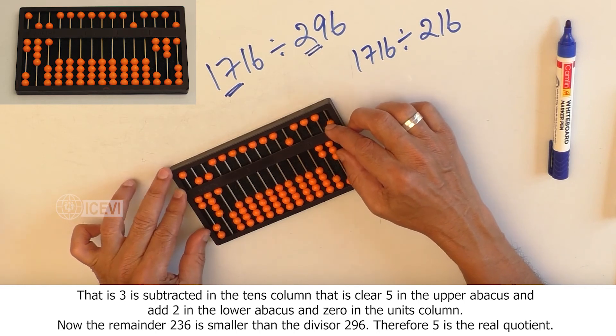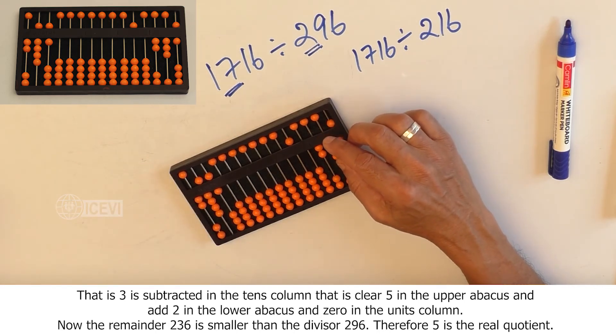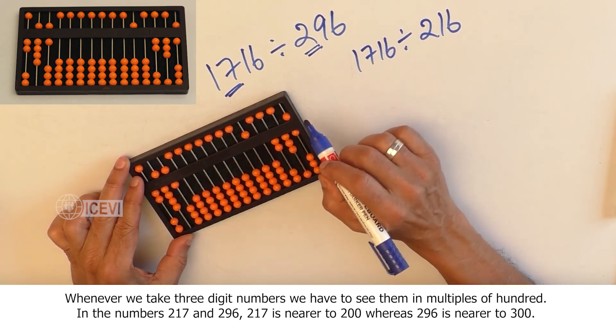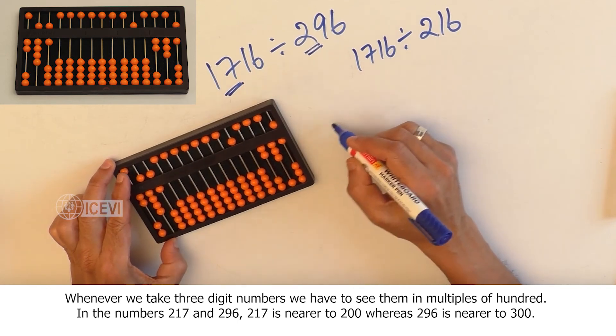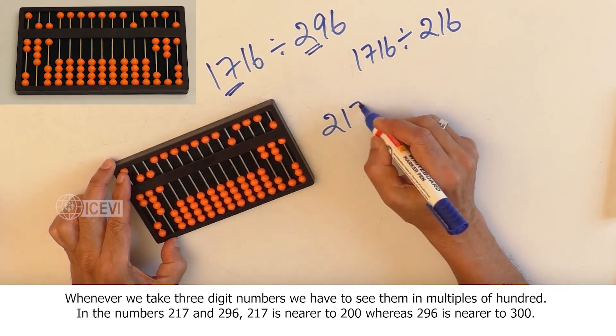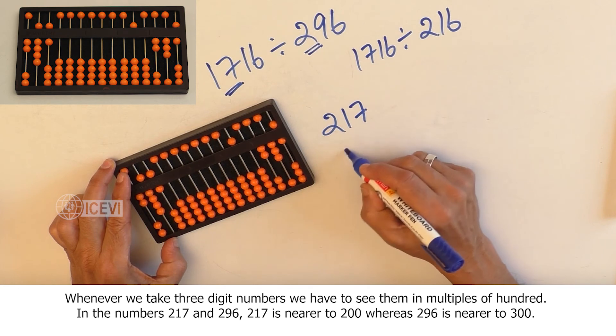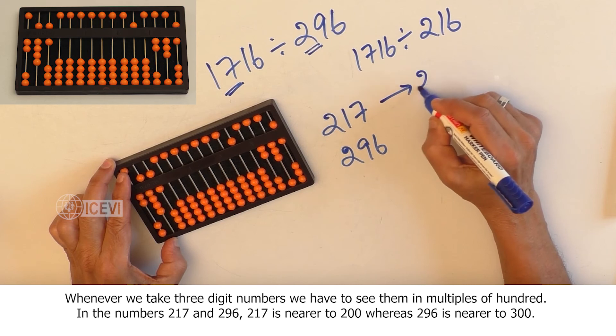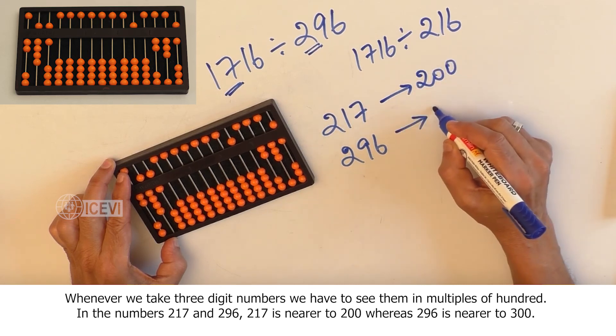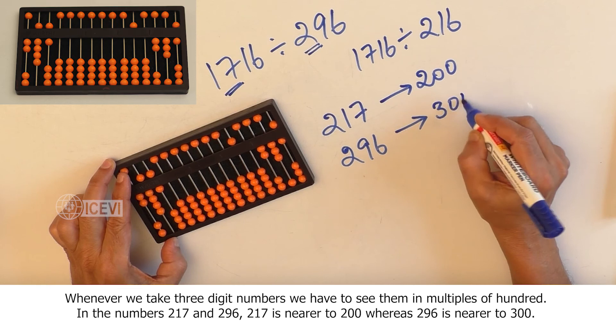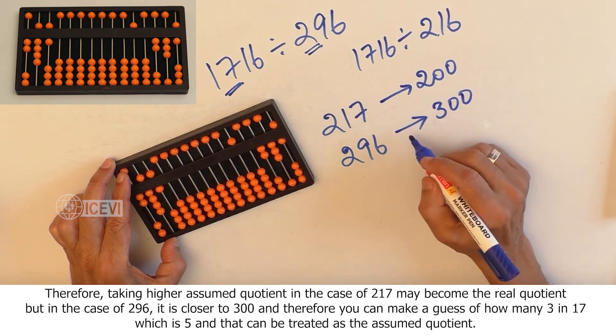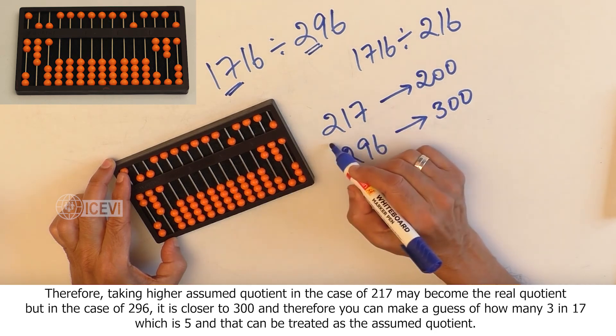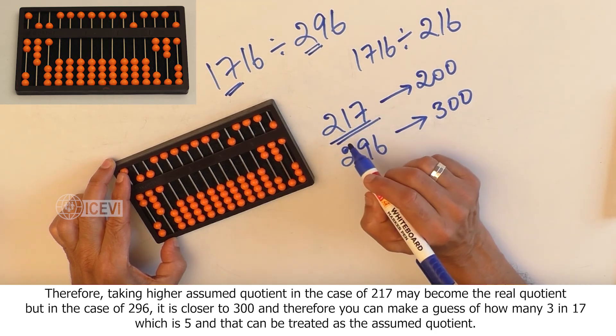Whenever we take three-digit numbers, we have to see them in multiples of 100. In numbers 217 and 296, 217 is nearer to 200, whereas 296 is nearer to 300. Therefore, taking higher assumed quotient in the case of 217 may become the real quotient.